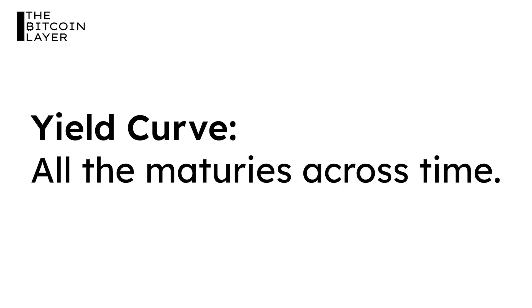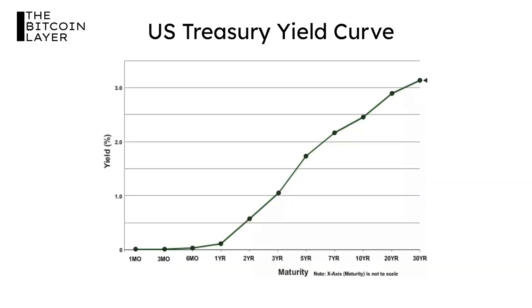Maturities start with one-month bills, three-month bills, two-year notes, ten-year notes, thirty-year bonds, for example. Those are some of the treasury maturities issued across what we call the yield curve. The yield curve refers to all the maturities across time. When we think about the treasury yield curve, we're thinking about the three-month bill all the way out to the thirty-year yield and what the yields look like across maturities.